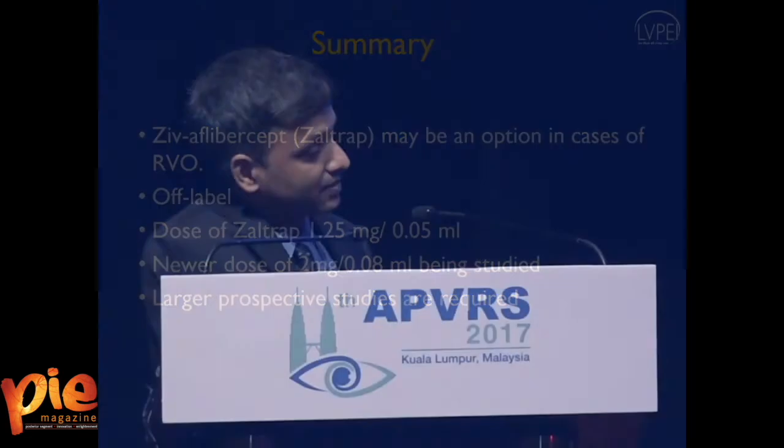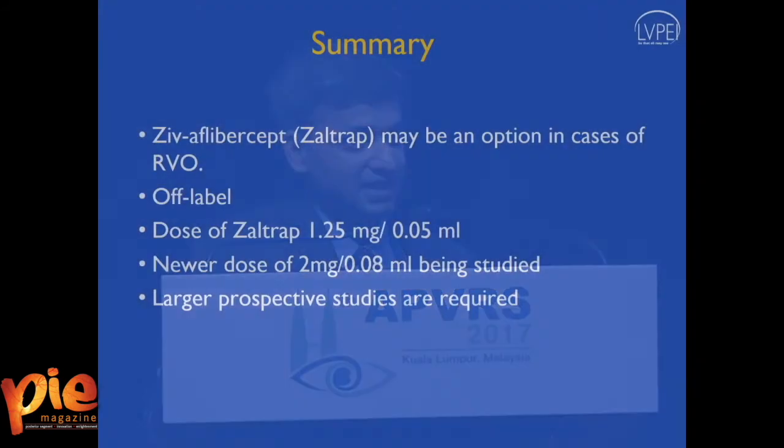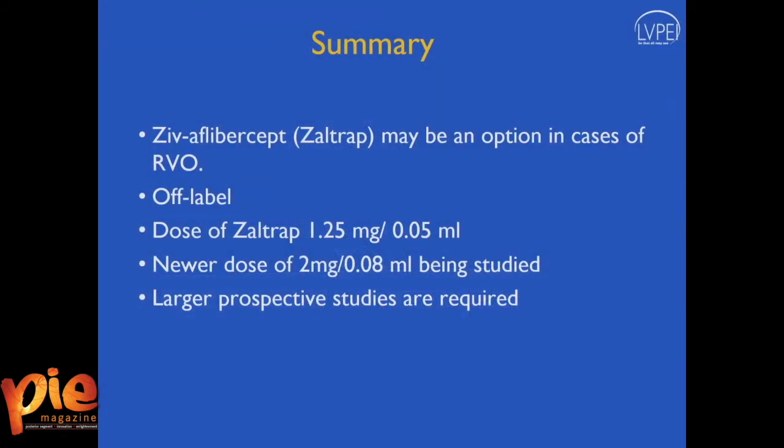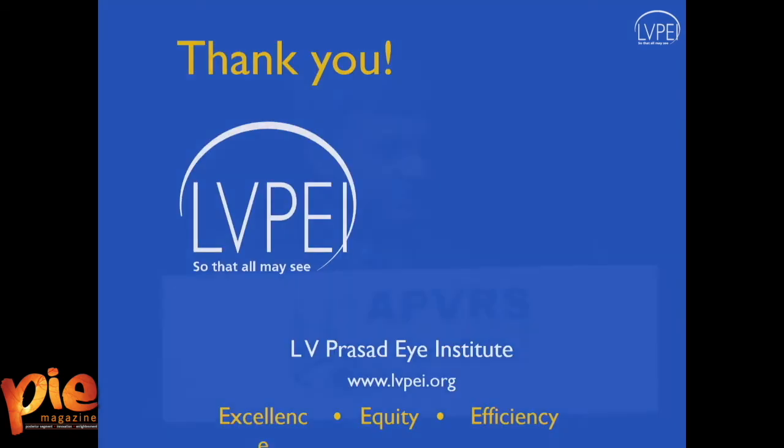In summary, Ziv-Aflibercept may be an option in retinal vein occlusion, although it is off-label. The dose of Zaltrap is convenient to use, though slightly less than what is available commercially with Ilia. We are currently doing studies with the newer dose of 2 mg in 0.08 ml, and larger prospective studies are required to validate our findings. Thank you very much for your kind attention.